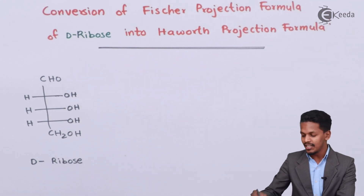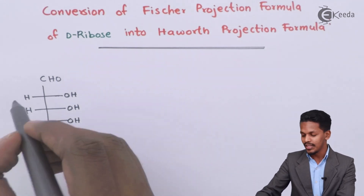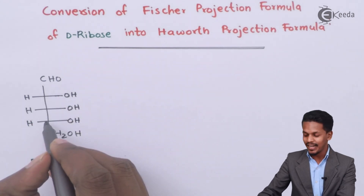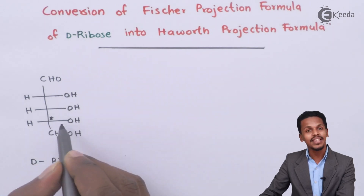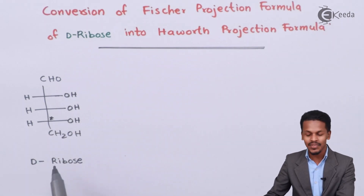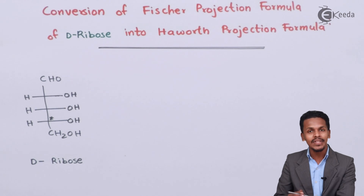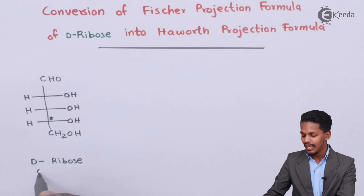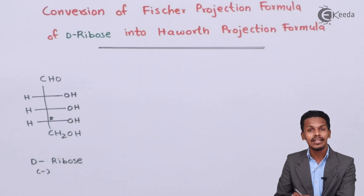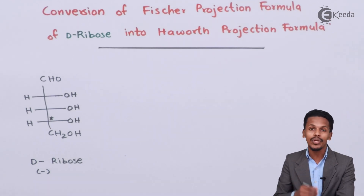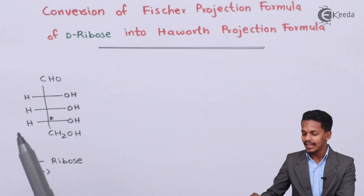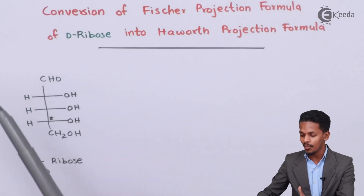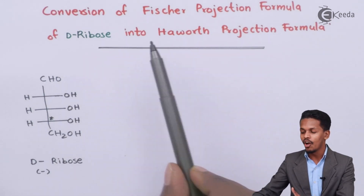The letter D represents dextroform. We can see that on the last chiral carbon atom, the OH is present on the right hand side, and that's the reason the name is D-ribose. However, it has also been found that this is a levorotatory compound. That is why we have to convert the Fischer projection formula of D-ribose into the Haworth projection formula.